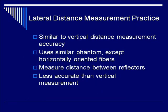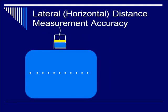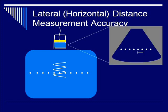The next thing to discuss is horizontal distance measurement accuracy, also called lateral distance measurement accuracy. It's very similar to vertical distance measurement accuracy. You use a phantom with horizontally oriented fibers instead of vertically oriented fibers, and using calipers you measure the distance between reflectors. Remember that this number will be less accurate than vertical measurement because our highest accuracy and highest resolution is in the axial direction.